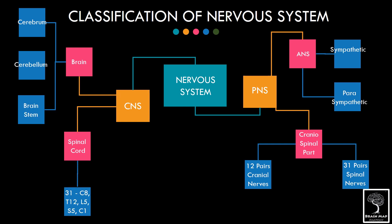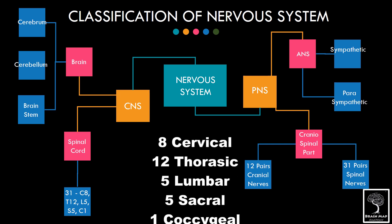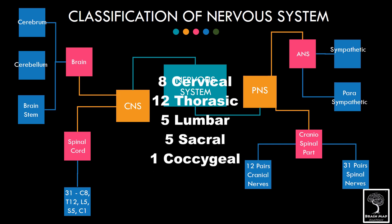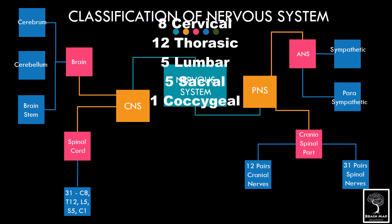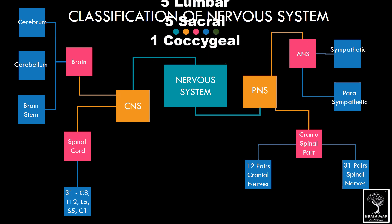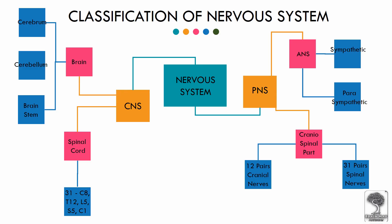The spinal cord is divided into 31 segments comprising 8 cervical segments, 12 thoracic, 5 lumbar, 5 sacral, and 1 coccygeal segment. This is the classification of the nervous system in a nutshell. In subsequent videos, the nervous system, brain, and spinal cord will be discussed in depth.